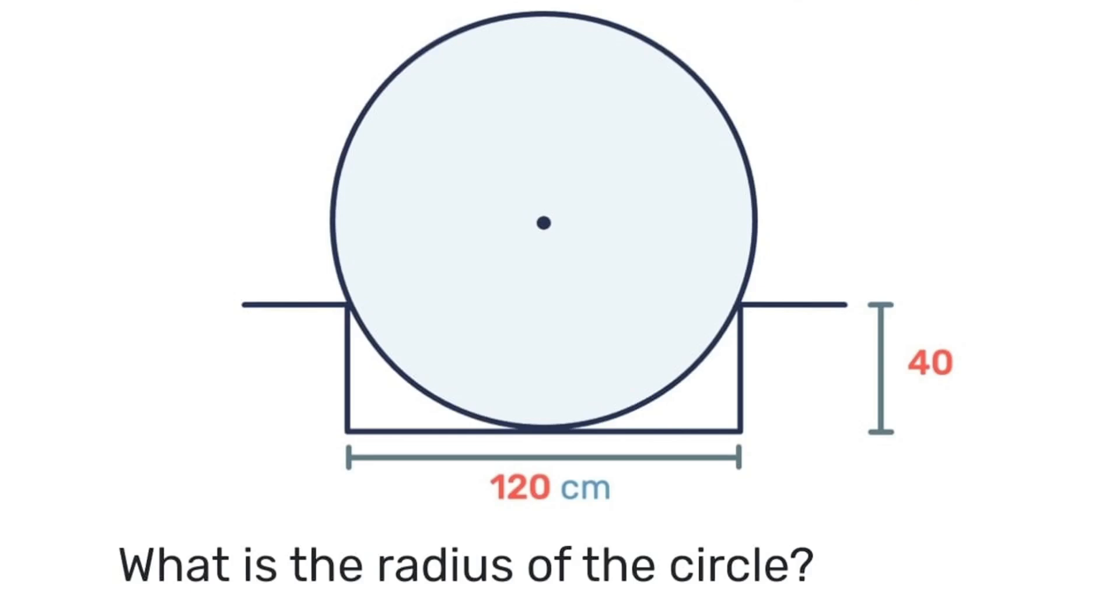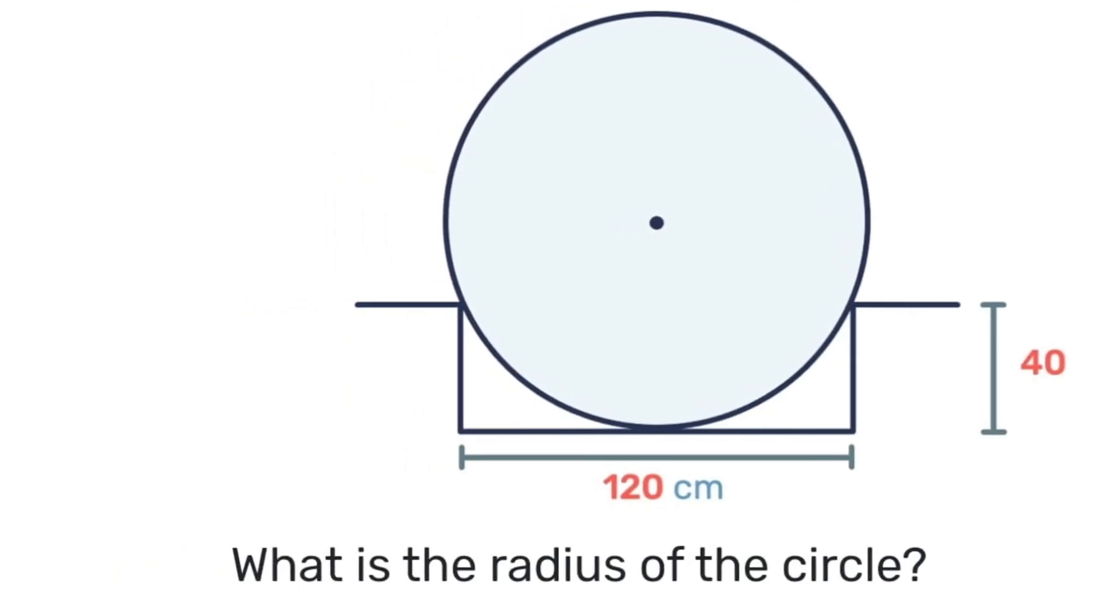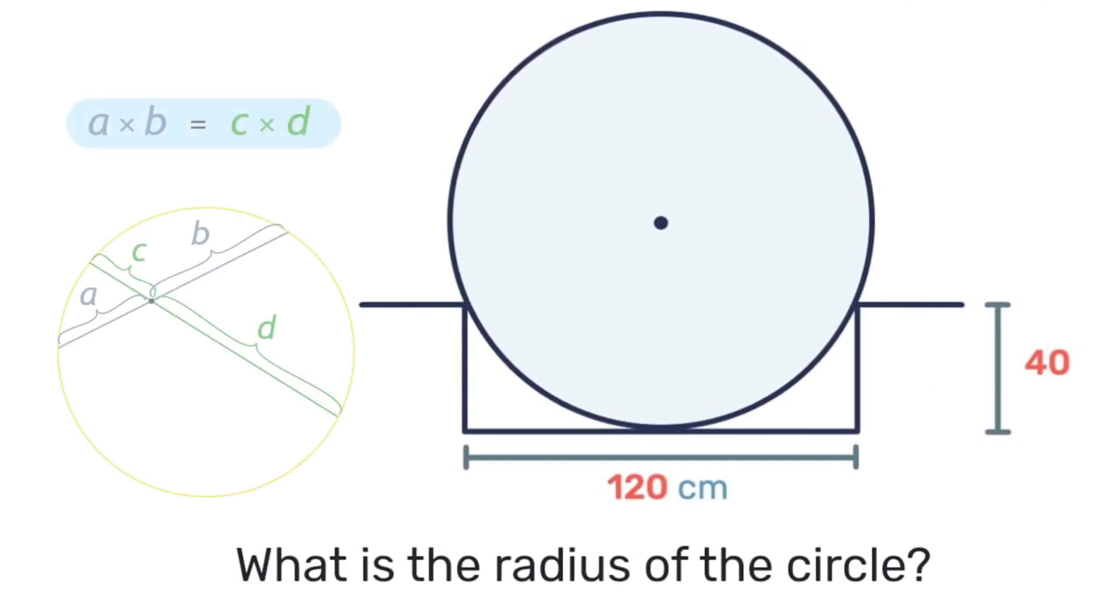Pause the video here and see what you can come up with. I'm gonna solve it this way. I'll be using what is known as the intersecting chord theorem, which says that whenever two chords of a circle intersect, the product of their line segments will be equal to each other.